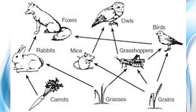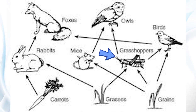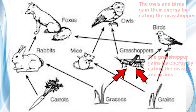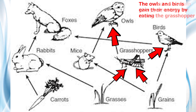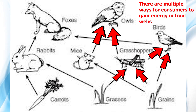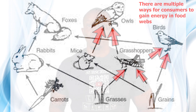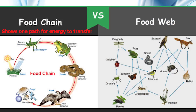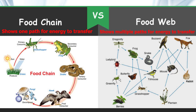Notice how there are several different ways for energy and matter to flow through this food web. For example, the grasshopper gains its energy by eating the grasses and grains. The owls and birds gain their energy by eating the grasshopper. The owl can also gain energy by eating the mouse, and the bird can also gain energy by eating the grains. There are multiple ways for consumers to gain energy in this food web. So once again, a food chain shows only one path for energy transfer, but a food web shows many different ways energy can be transferred from one organism to the next.